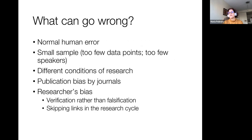When we look at data, there are multiple things that can go wrong: normal human error, too small a sample, very few data points, very few speakers, different conditions of research. Often there is publication bias by journals, because many journals will not take a paper if it's just a description — you have to have a discovery, and not everything has to be a discovery. And then probably the most important thing is researcher's bias, because we often want to support our favorite hypothesis rather than try to falsify it.